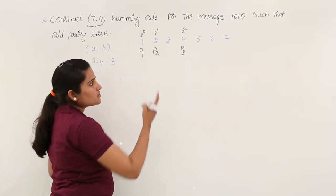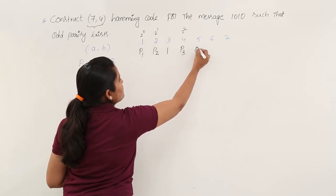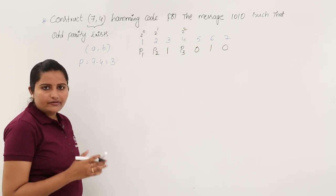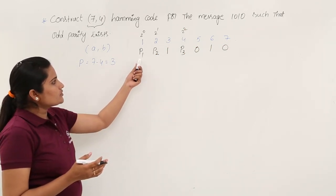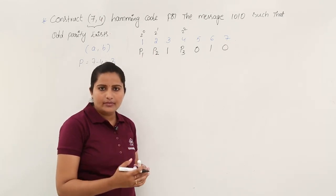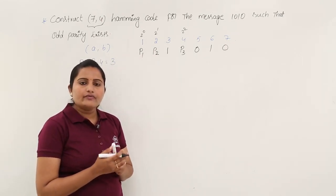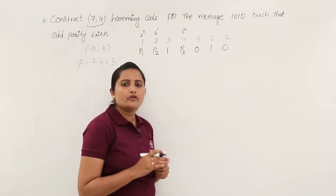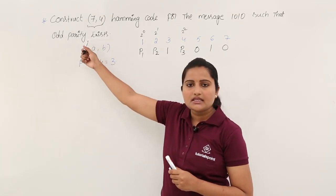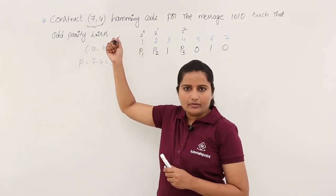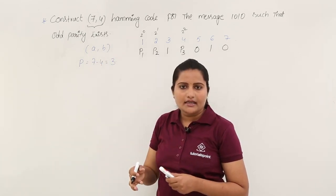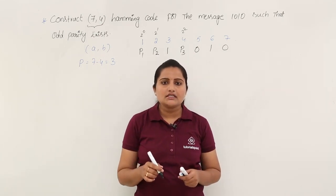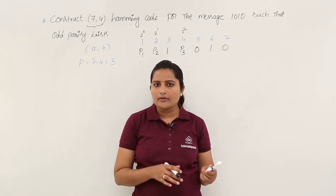The remaining positions are the message bits, so the given message is written into those spots. We have now taken the structure of the Hamming code. By finding the values of P1, P2, and P3 we will complete the generation of this code. When generating P1, P2, P3 we need to keep the required parity in mind — in this problem we need odd parity.